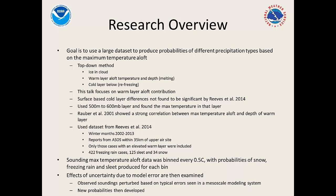That's not to say the surface-based cold layer doesn't have an impact. When averaged over all cases, Heather Reeves' paper found that differences weren't significant — though individual cases may differ. In general, the warm layer aloft seems to be the more determining factor for precipitation type at the surface. We looked at the 500 meters to 600 millibar layer and found the maximum temperature in that layer. Past studies show a strong correlation between depth and max temperature, so we were comfortable using just the max temperature.